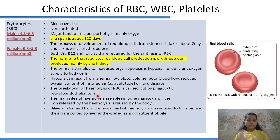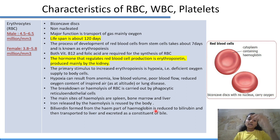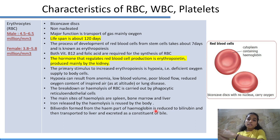Breakdown or hemolysis of RBCs is carried out by phagocytic reticuloendothelial cells. The main sites of hemolysis are the spleen, bone marrow, and liver. Iron released by hemolysis is reused by the body. Biliverdin formed from the heme part of hemoglobin is reduced to bilirubin, transported to the liver, and excreted as a constituent of bile.